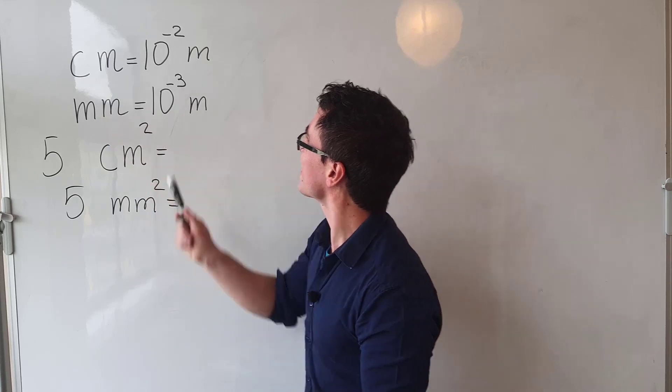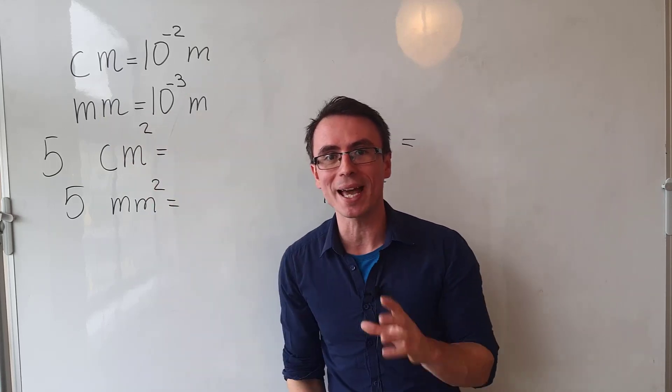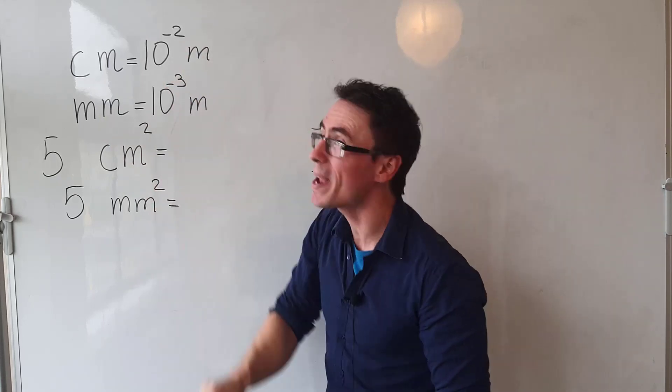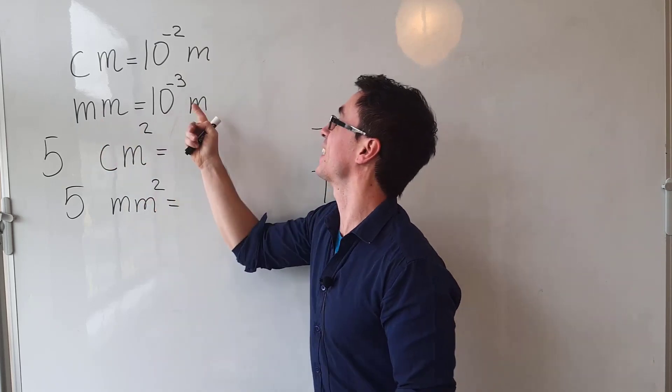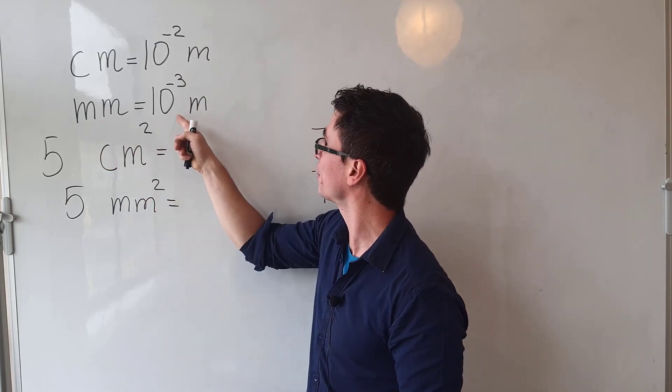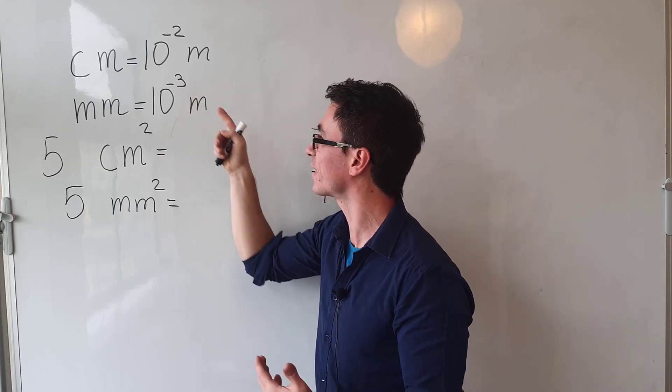The thing to remember is that centi actually stands for a mathematical power which is 10 raised to the minus 2, and milli as a millimeter stands for a mathematical power which is 10 to the power of minus 3.